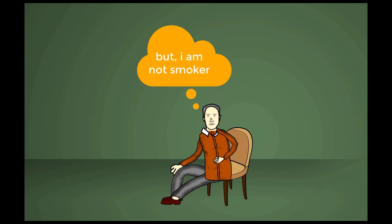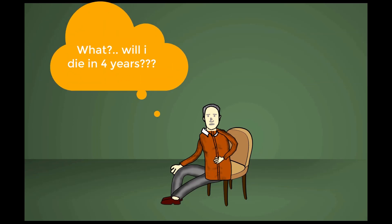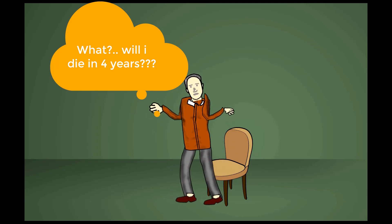Hemoglobin and hematocrit are increased in response to chronic hypoxemia. Average life expectancy following diagnosis is about four years.